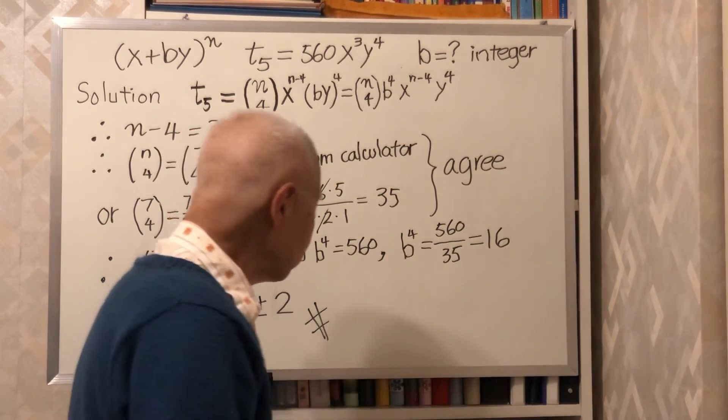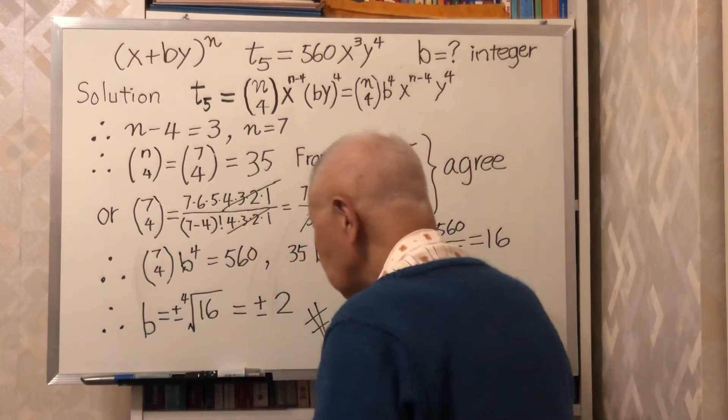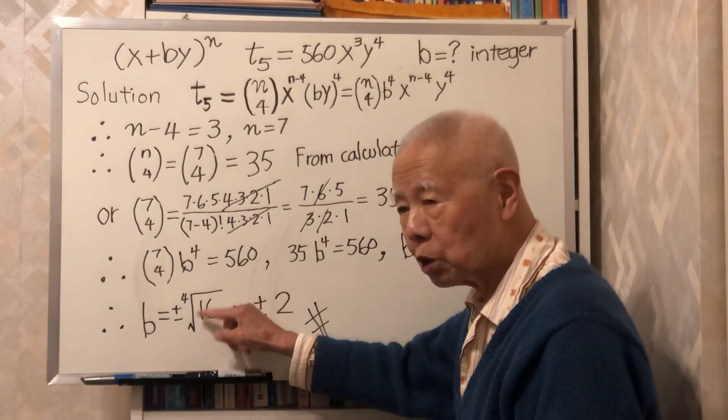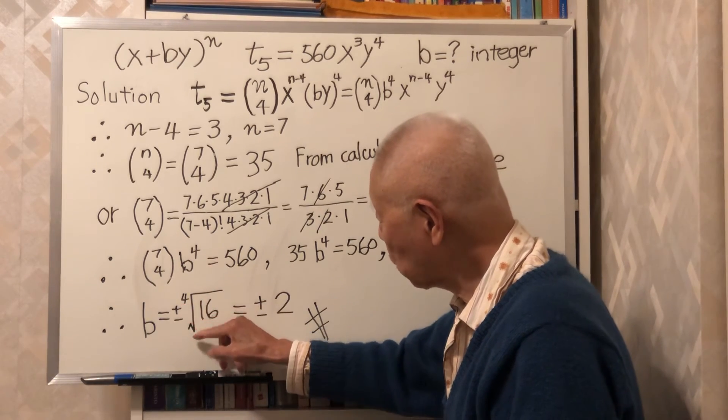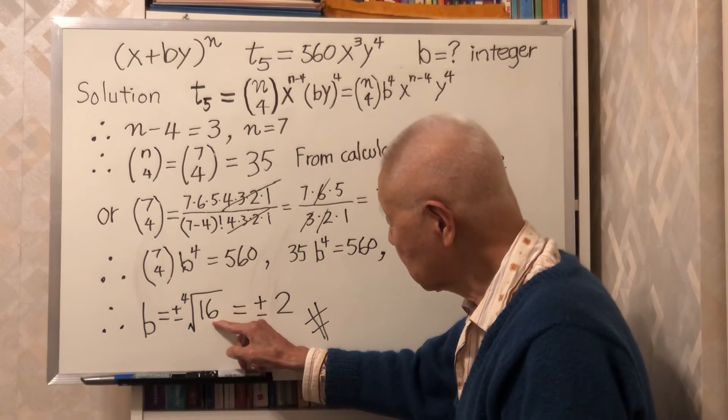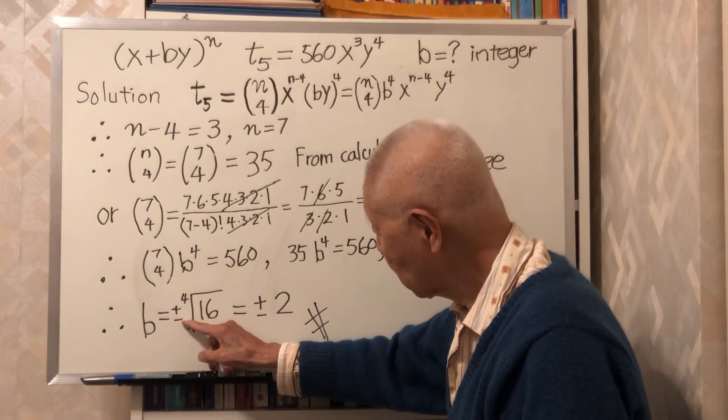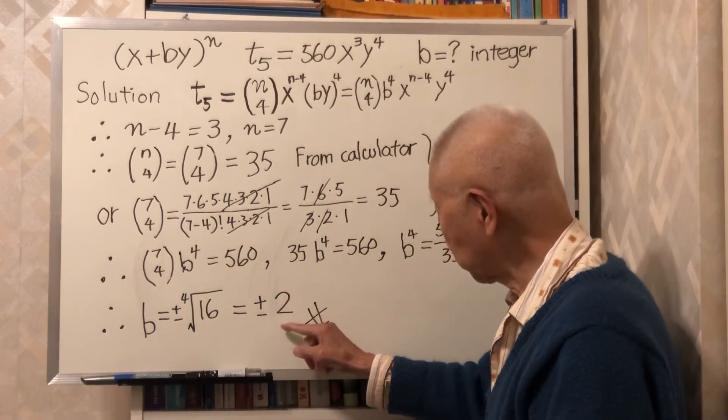What is B? B is square root, fourth square root of 16. Of course, you need a plus minus. So the answer is plus minus 2.